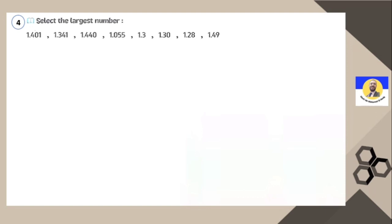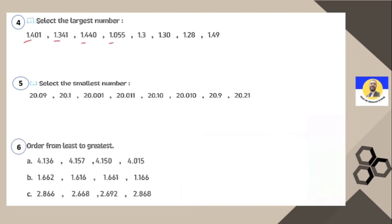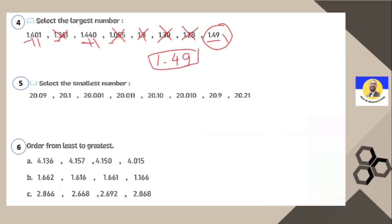Question 4: select the largest number. All numbers start with 1 before the decimal point. Going to digits after the decimal — in tenths: here it's 4, then 3, 4, 0, 3, 5, 5, 5, 5, 3, 2. Those with 3, 0, 3, 2 are smaller than 4, so they're eliminated. Remaining candidates have 4 in tenths. Moving to hundredths: here 0, here 4, here 9. Nine is the greatest, so the largest number is 1.49 — or with an extra zero added for balancing, 1.490.